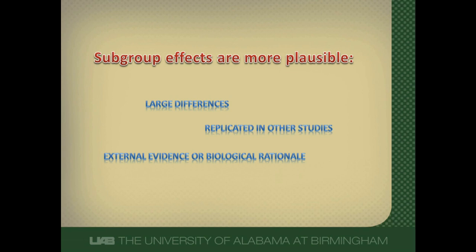We also like to see if there's some biologic rationale for why this subgroup effect might exist, and sometimes it comes from external evidence like animal studies or maybe using a surrogate endpoint. If it shows a similar subgroup effect with a surrogate, we can perhaps believe in the hard clinical outcome study that the subgroup effect is real. And finally, if similarly related outcomes show the same effect in the subgroup, then it becomes more plausible.